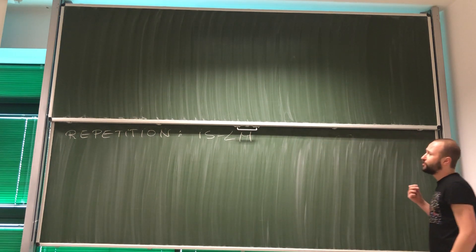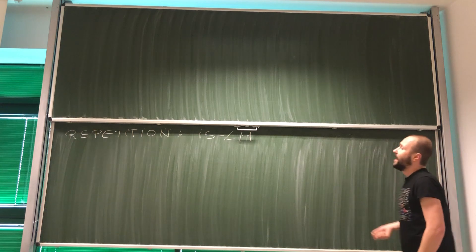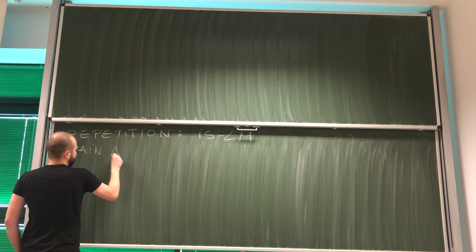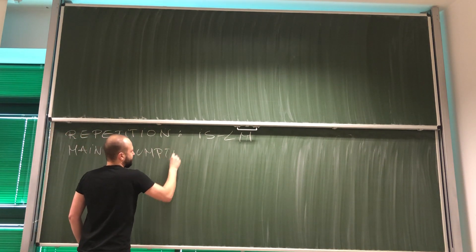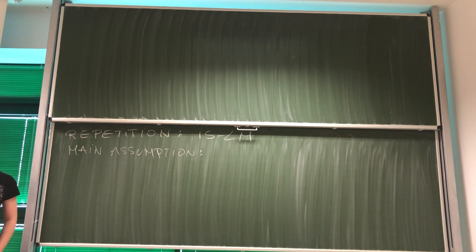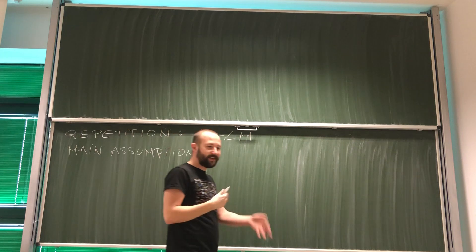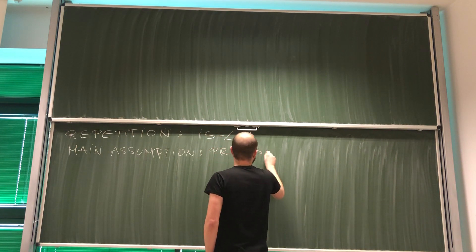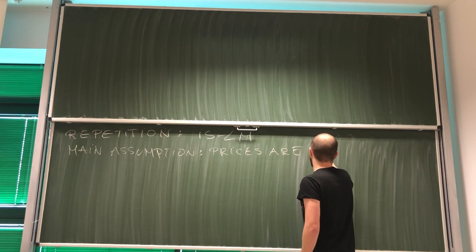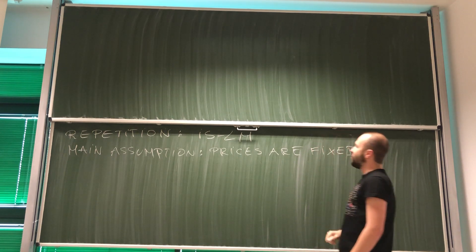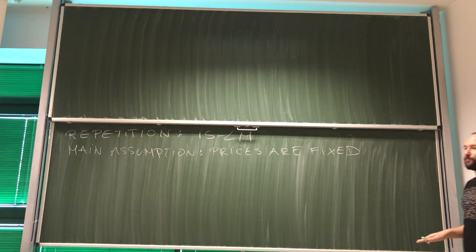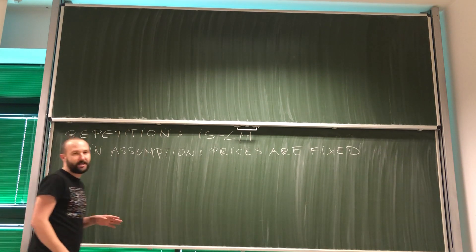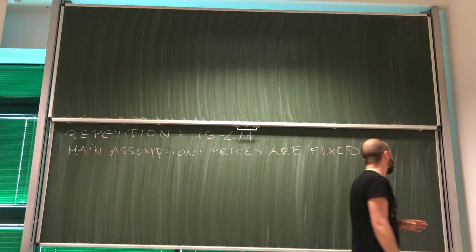We already talked about price flexibility in our previous video and the main assumption of IS-LM that underlines the short run analysis is that prices are fixed. So we are completely disregarding prices in our model. This is why it's a short run model, because prices do not have enough time to adjust to changes in the economy.